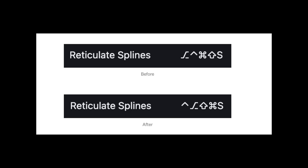Flutter apps on Mac platforms now order the shortcut modifiers in menus to follow Apple Human Interface Guidelines. These guidelines are a set of standards for developing user interfaces for Apple platforms, designed to help developers create interfaces that are consistent with the overall look and feel of Apple's operating system.